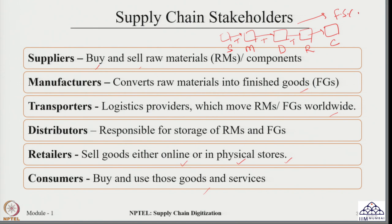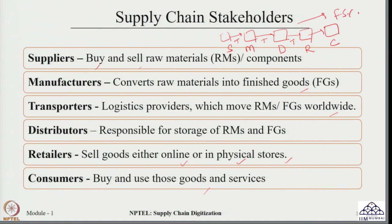In today's time, when we are trying to ensure that customers are happy and their requirements are fulfilled, it is very important that we keep a check on this. Suppose the customer is not happy with the product and would like to return it — the supply chain can be seen in the reverse direction, where the customer returns a product, it is collected by the retailer or distributor depending upon the network design, and it is moved in the backward direction towards the manufacturer.